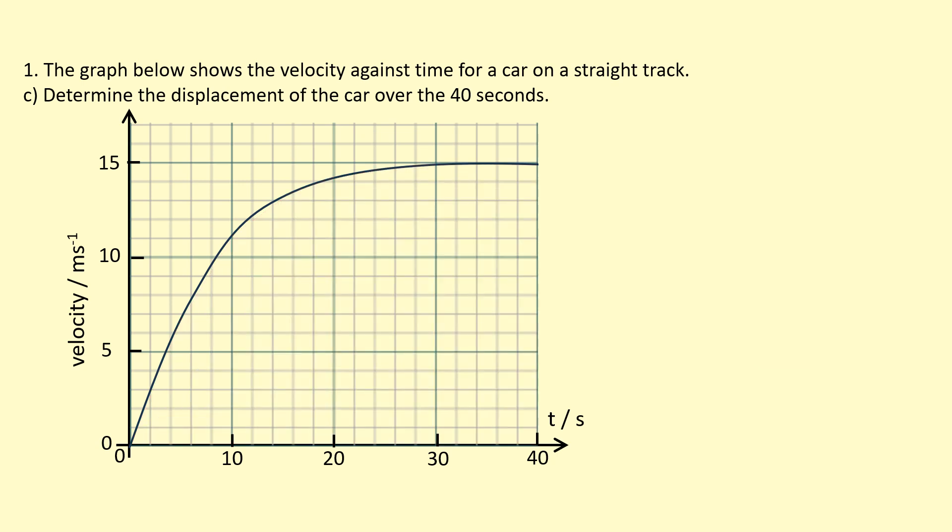There is another method for determining the area under a graph, and that's to count squares under the curve. So, let's look at this box here, that's 5 by 10, so that means each of those boxes has an area of 5 times 10, which is 50 meters.